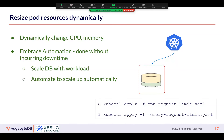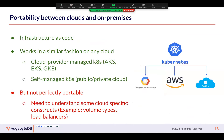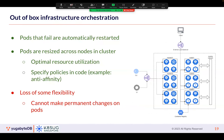Through horizontal pod auto-scaling you can run more things simultaneously, and when the spike is over you can go down. You can also resize your pods horizontally and vertically. Kubernetes provides a very good abstraction for a variety of infrastructures — this is why we've been using Kubernetes. It makes your application quite portable, and Kubernetes is no longer just a container orchestrator; it's an infrastructure API today.